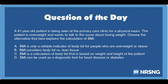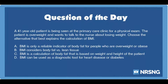Again — a 41-year-old patient is being seen at the primary care clinic for a physical exam. The patient is overweight and wants to talk to the nurse about losing weight. Choose the alternative that best explains the calculation of BMI. A. BMI is only a reliable indicator of body fat for people who are overweight or obese. B. BMI considers body fat versus lean tissue. C. BMI is a calculation of body fat that is based on weight and height of the patient. D. BMI can be used as a diagnostic tool for heart disease or diabetes.